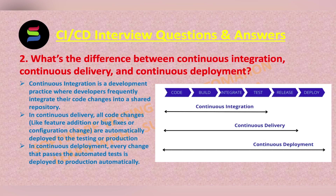Every time new commits are integrated into the main branch, continuous integration emphasizes automation testing and makes sure that the application is not broken. Continuous integration means: first coding, then build, then integrate, then test.